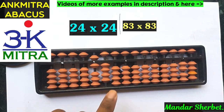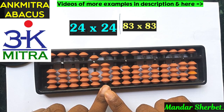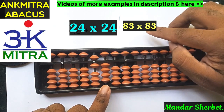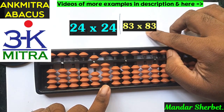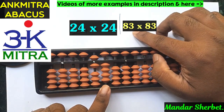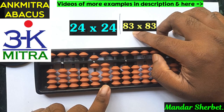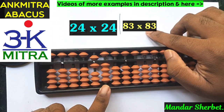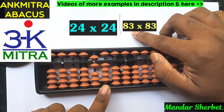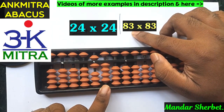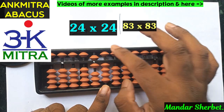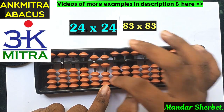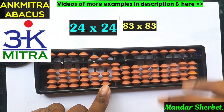Now I move one place to the right to the third rod, and this time I multiply this 8 with the units place digit of the other number. So 8 multiplied by 3 is 24, and I'll add 24 from this third rod: twenty and four.